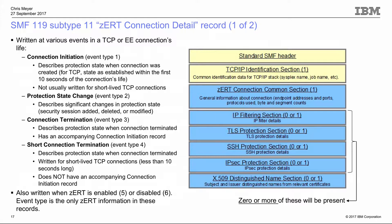If there's any significant change to the protection state during a connection's life, we write an event type 2 — a protection state change record. Examples include TLS protection being turned off mid-connection (like an FTP clear control channel command), or the opposite: an IPsec tunnel being installed halfway through a clear text connection. Changes in significant attributes like protocol version or cryptographic algorithms trigger these records.